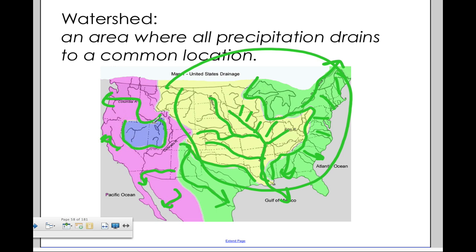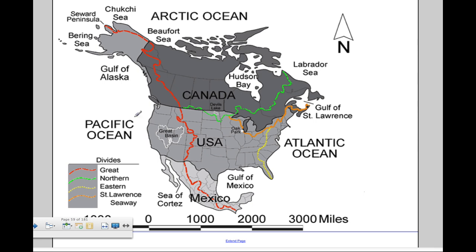This little area here, like Death Valley in the middle of Nevada — it's a desert, and the water goes nowhere. Looking at the same idea on a different map, we've drawn lines to show the separations. Those lines are called divides: the Great Divide, the Northern Divide, the Eastern Divide. You don't need to memorize their names, but you need to know that watersheds are separated by what are called divides.